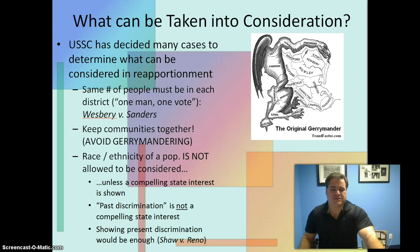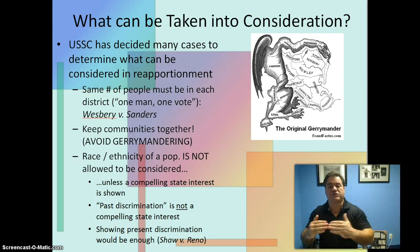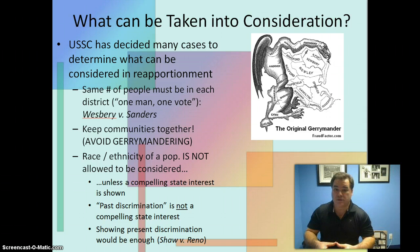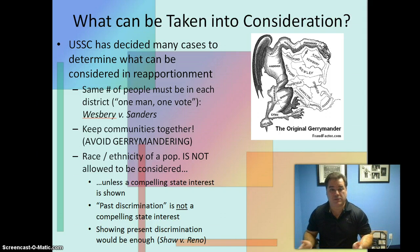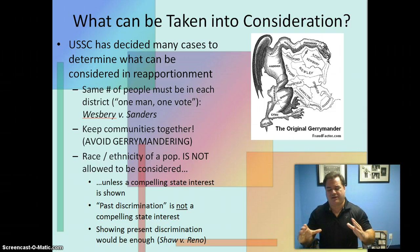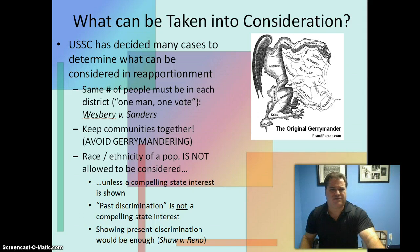A second principle is the idea of keeping communities together — you want to avoid spreading people out or splitting up communities. The term 'community' is purposely vague: it could mean an actual town or a community of people. Each court case looks at these issues differently. You also want to avoid what's referred to as gerrymandering. Gerrymandering is the process of creating districts that are non-contiguous — not solid, compact districts. Gerrymanders stretch and meander all over the place.